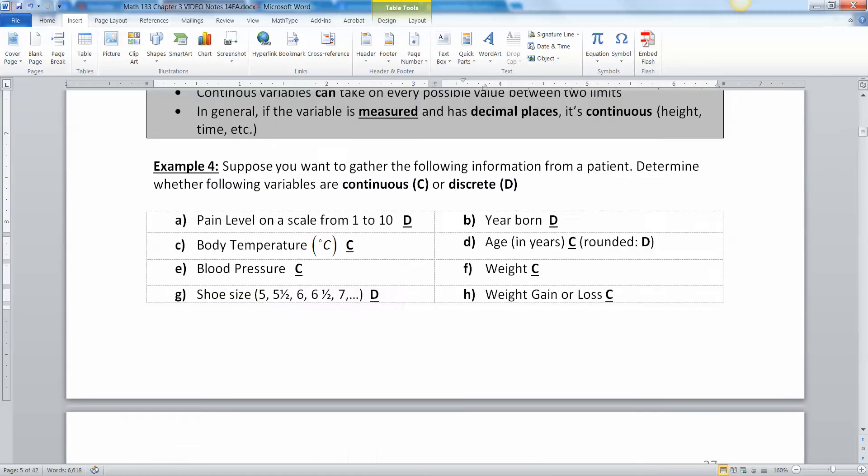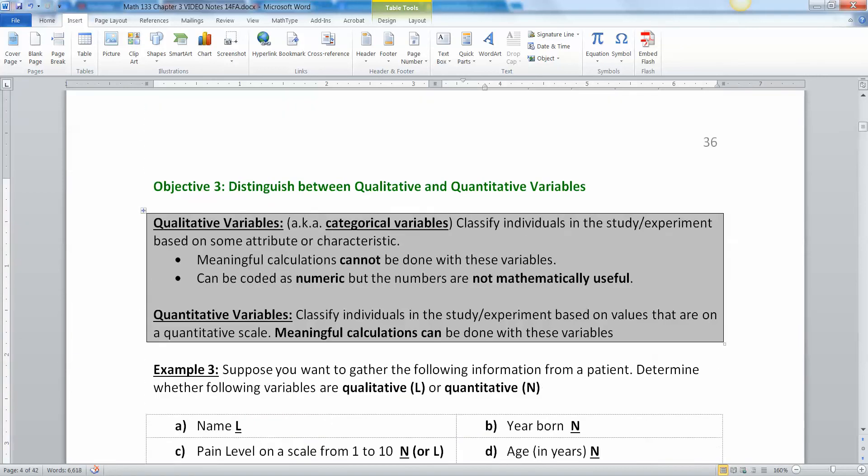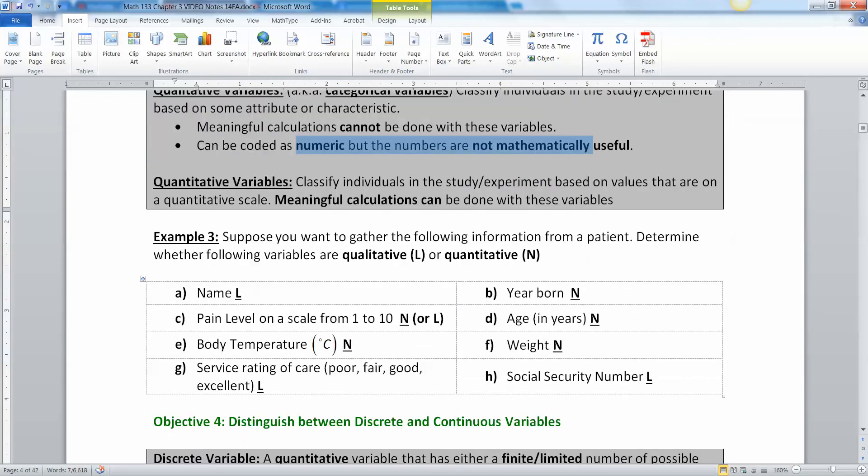Just a quick recap of what we've learned so far. We learned there's a difference between qualitative variables and quantitative variables. Qualitative are more like categories where you can't do meaningful calculations, and quantitative are numbers where you can do meaningful calculations. Remember zip codes don't fall into that; they fall into qualitative.